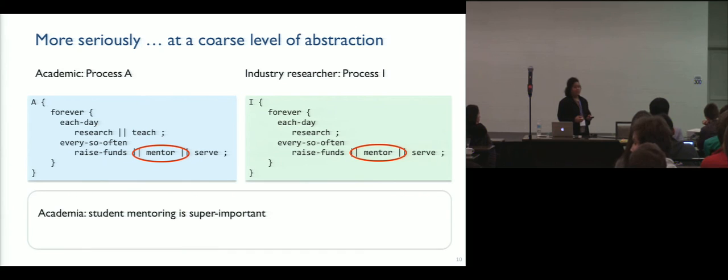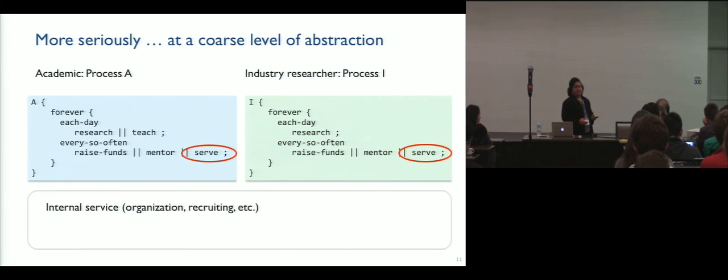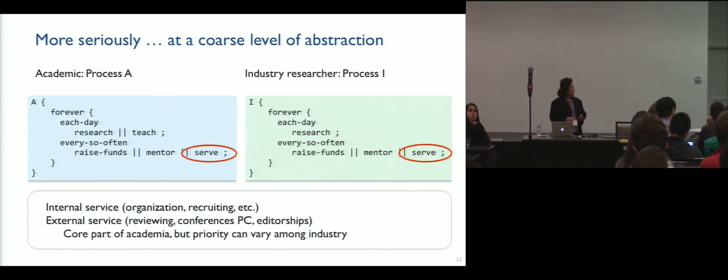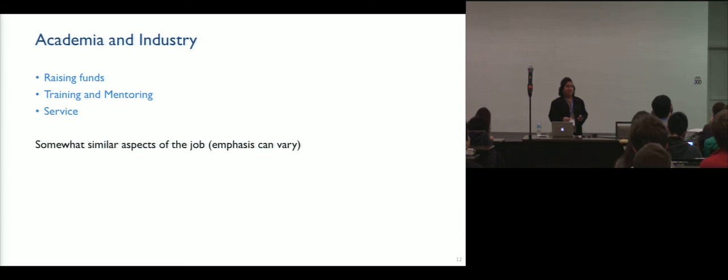Let's shift to mentoring. In academia, of course, student mentoring is super important. And that's what we are all here for in some sense. Industry mentoring junior team members is equally important if you want to build a successful team, if you want to have successful projects. Serving internal service that goes towards building an organization, doing recruiting, helping people believe in your cause, are all valued and essential. External service, and by this I mean service to the research community in terms of reviewing, in terms of conference organizing, serving on PCs, editorships, and so on, is definitely a core part of academia. But the priority varies among different industries and maybe even over time.